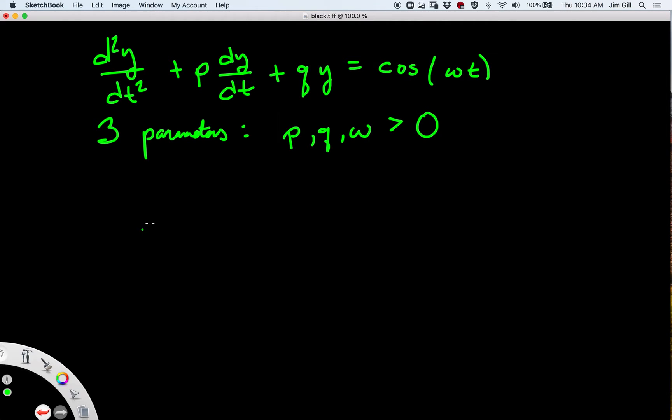Now we know that this differential equation is going to have a particular solution that looks like this. It's going to be equal to A times cosine of omega t plus phi, and I'll explain what A and phi are in a second.